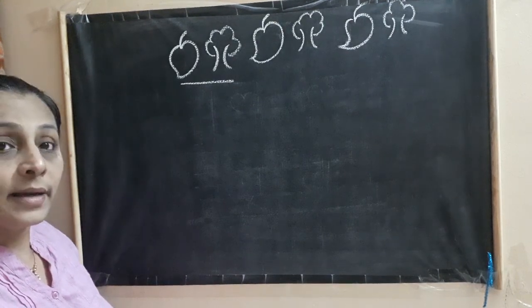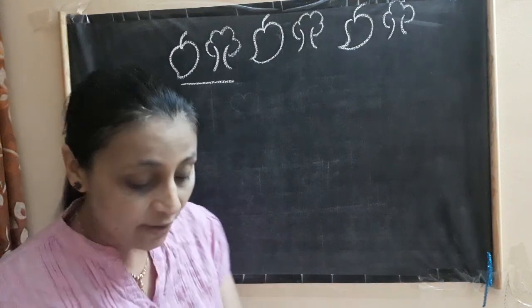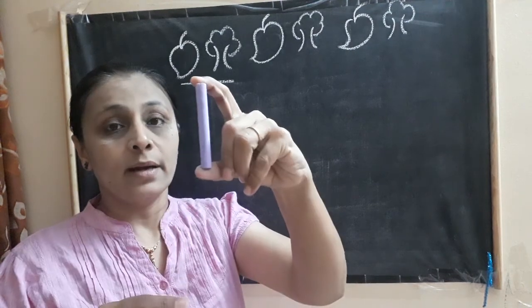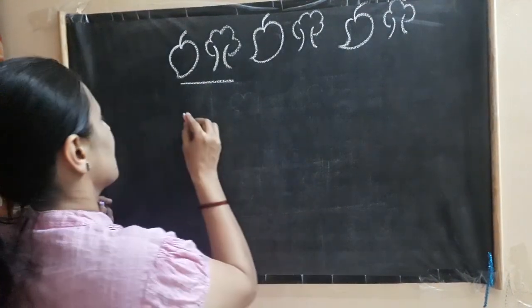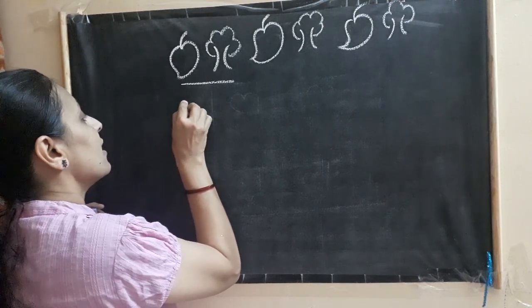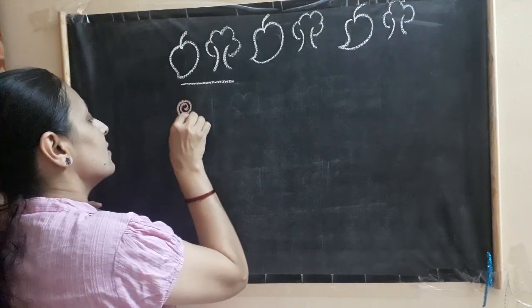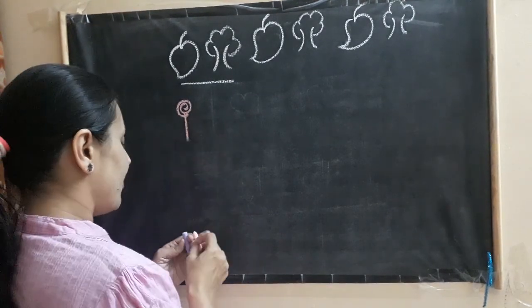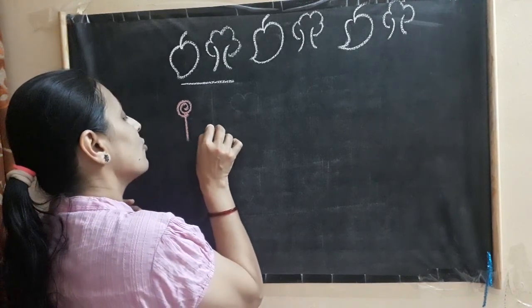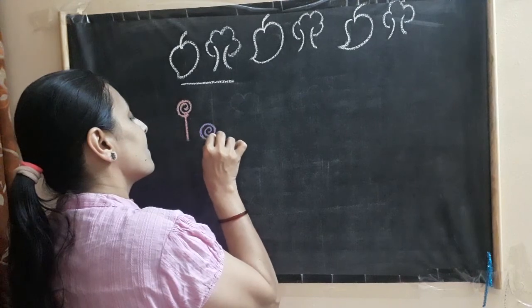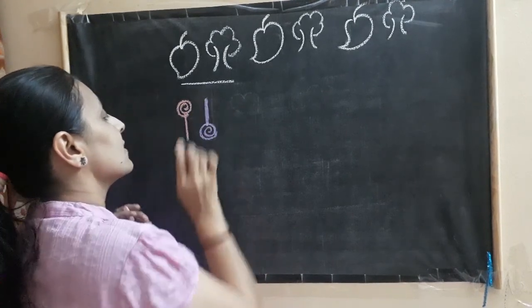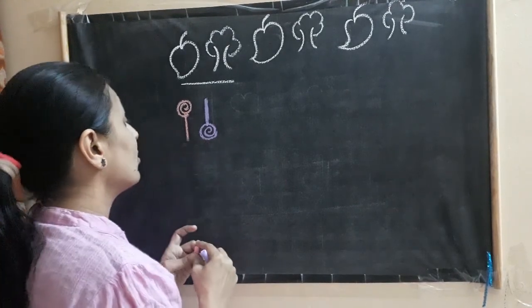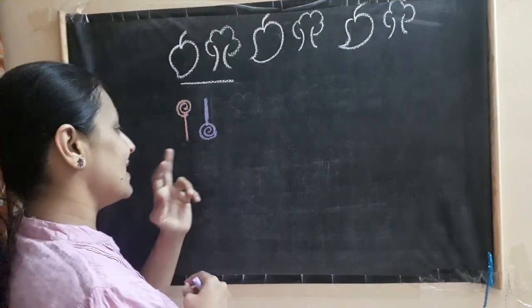Now let's see another pattern. Here I have two chalks — one is pink and another is purple. I'm going to draw your favorite thing. Tell me, children, what is it? A lollipop! Now this is a lollipop, and one lollipop I'm going to draw upside down like this. So: red lollipop, purple lollipop upside down.